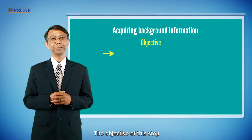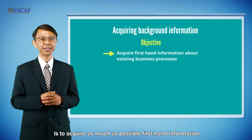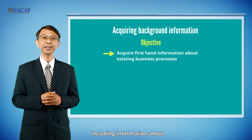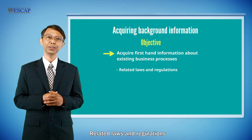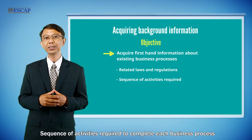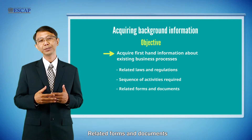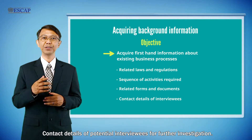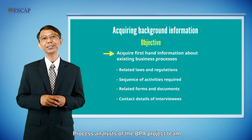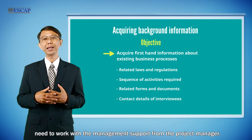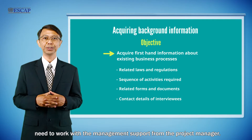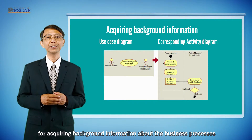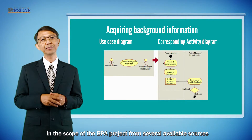The objective of step 1 is to acquire as much as possible first-hand information about existing business processes in the scope of our analysis, including information about related laws and regulations, sequence of activities required to complete each business process, related forms and documents, and contact details of potential interviewees for further investigation. Process analysts of the BPA project team need to work with management support from the project manager to conduct this research from several available sources.